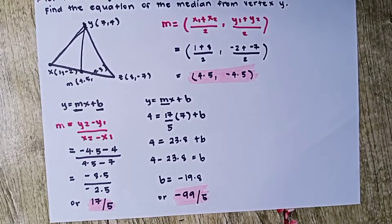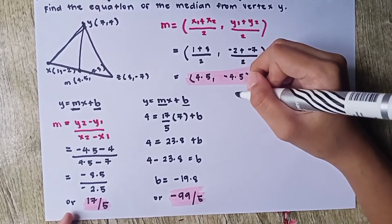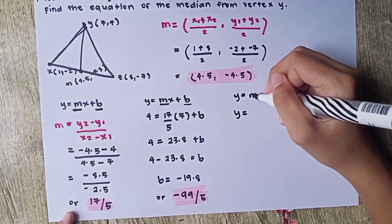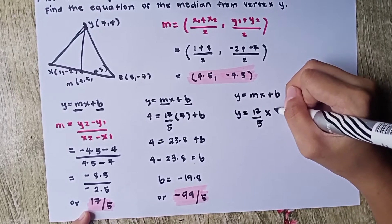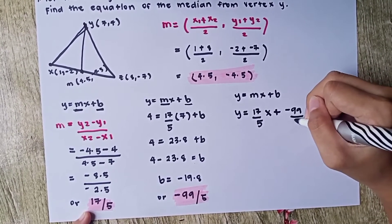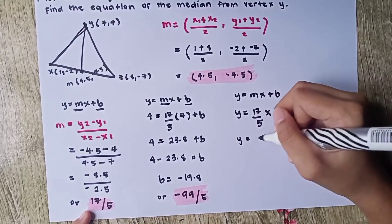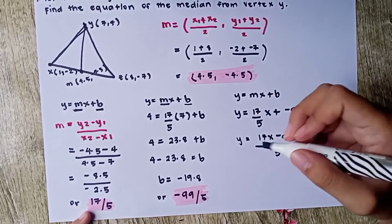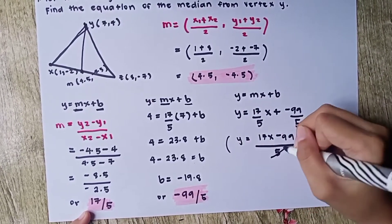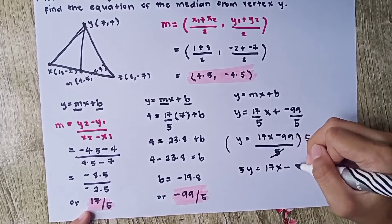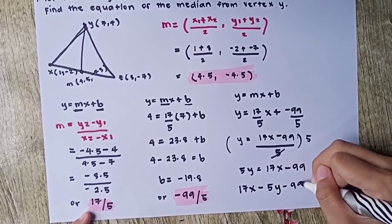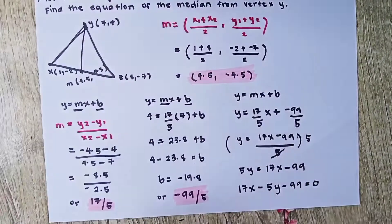Since we already have the slope and b, we complete the equation: y = (17/5)x + (-99/5), which simplifies to y = (17x - 99)/5. Multiplying both sides by 5 gives 5y = 17x - 99, or 17x - 5y - 99 = 0. This is our final answer.